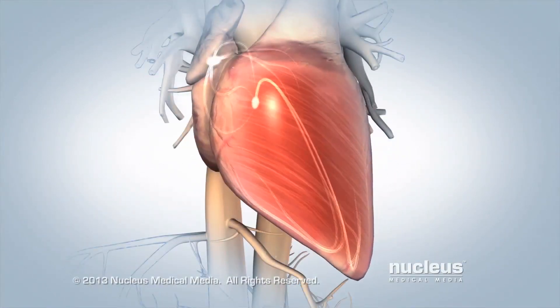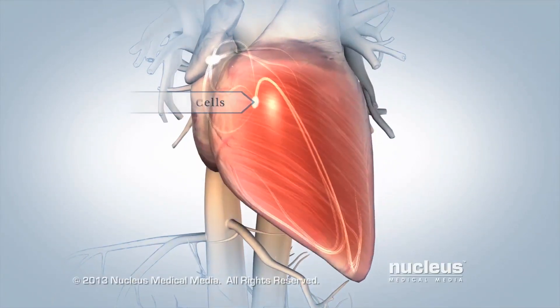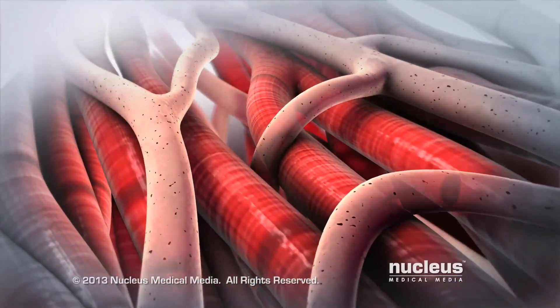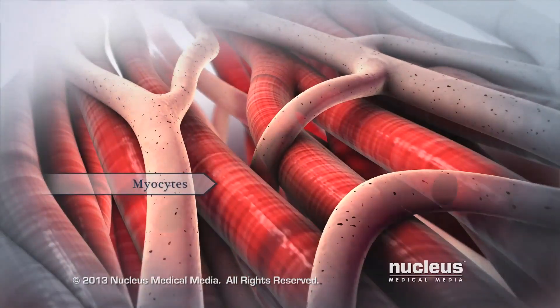When special cells, called pacemaker cells, generate electrical signals inside your heart, the heart muscle cells, called myocytes, contract as a group.